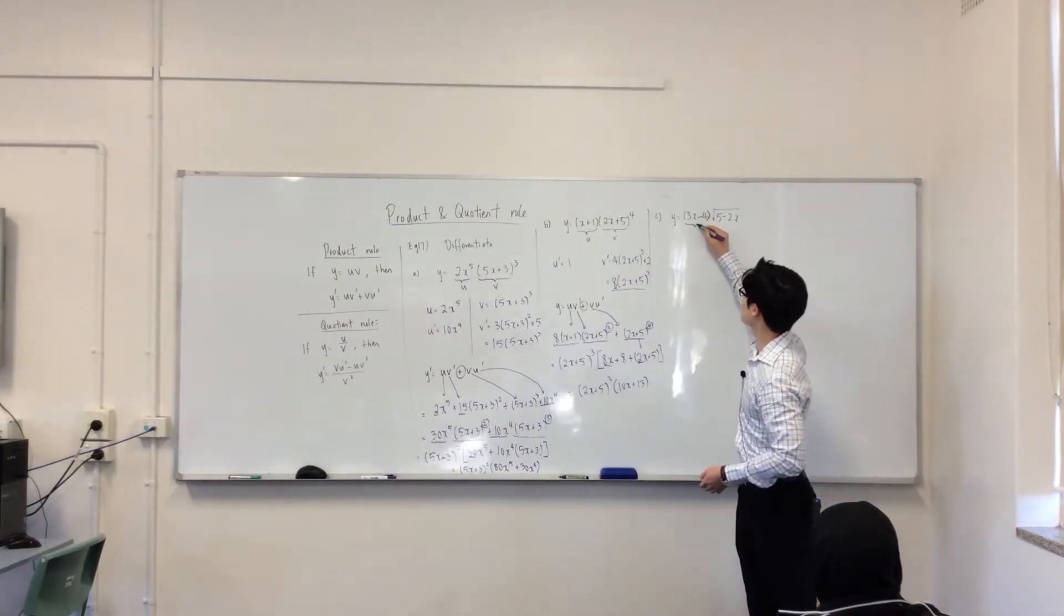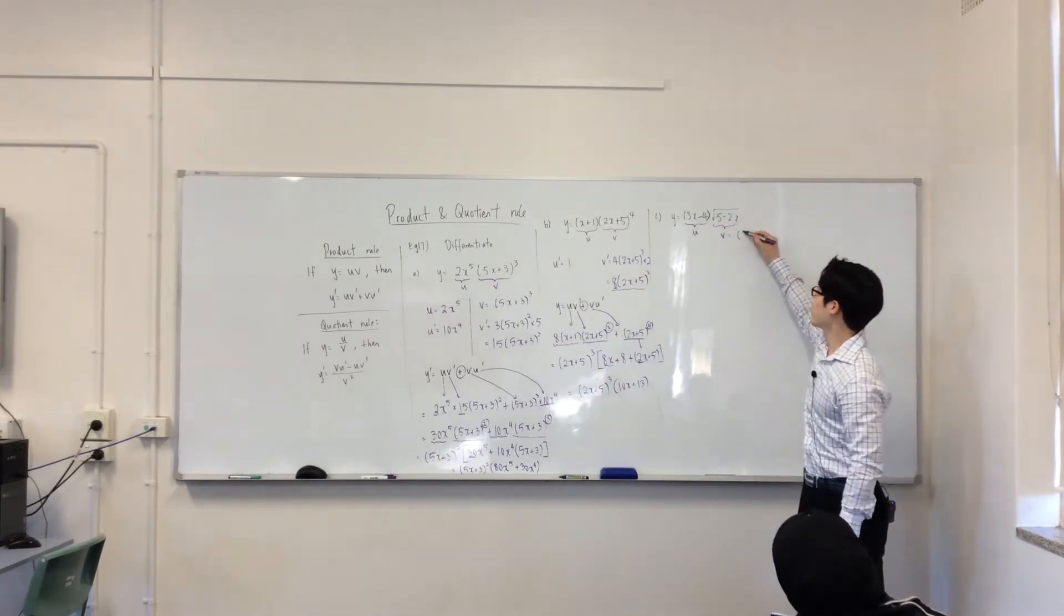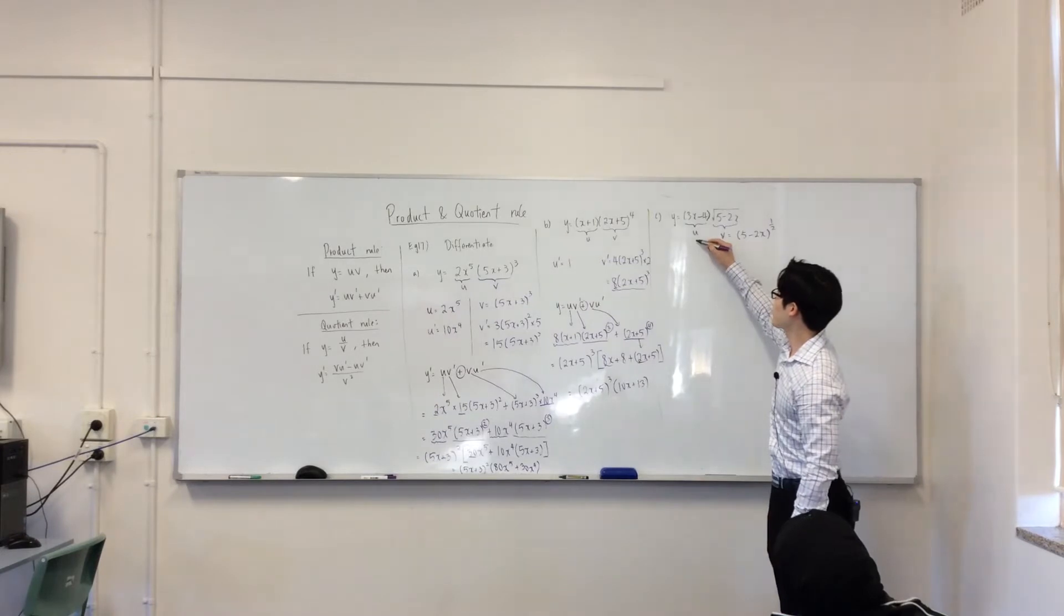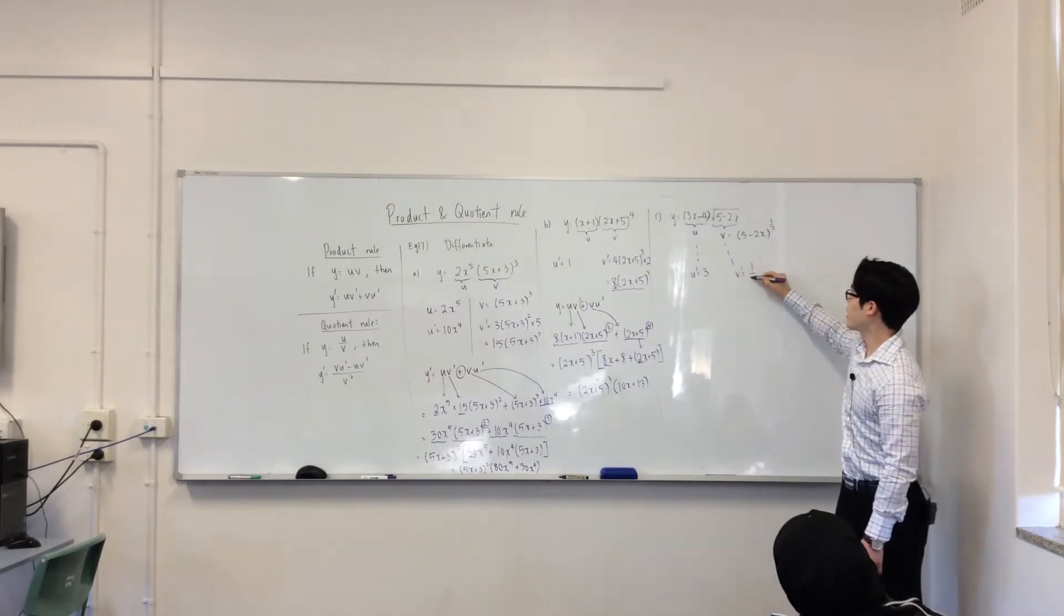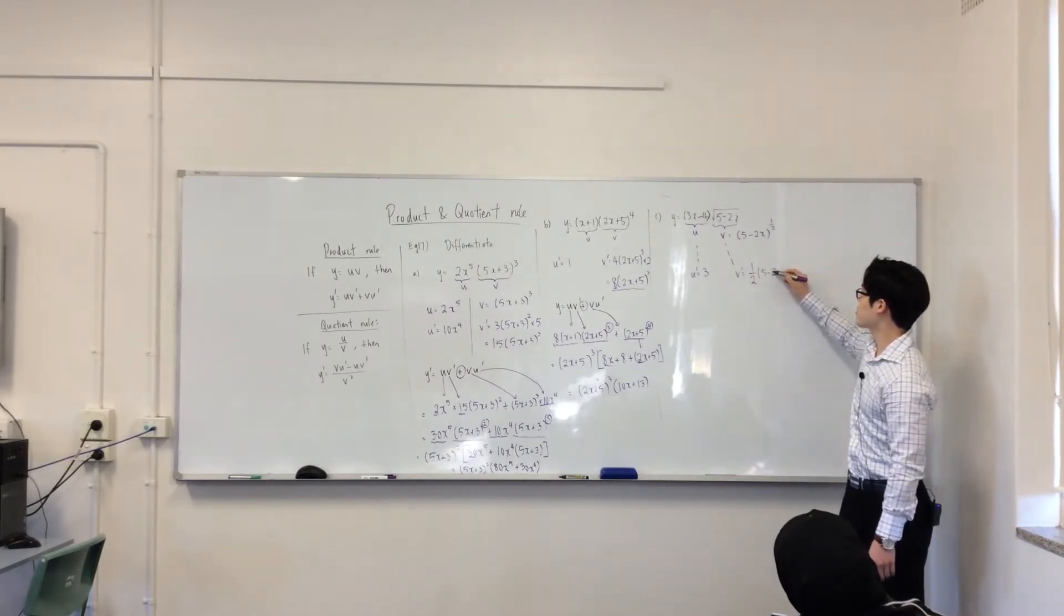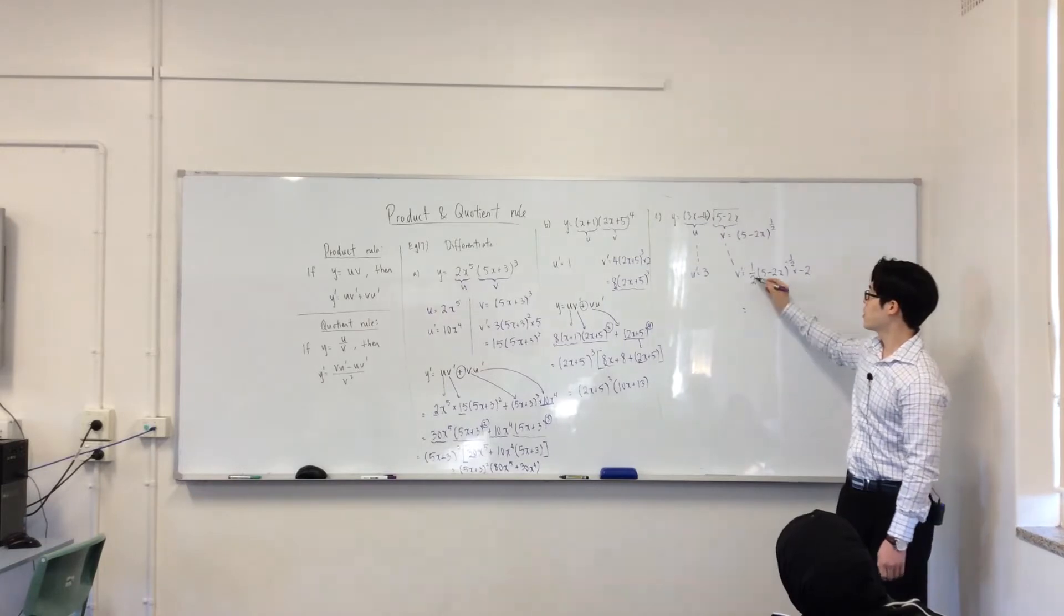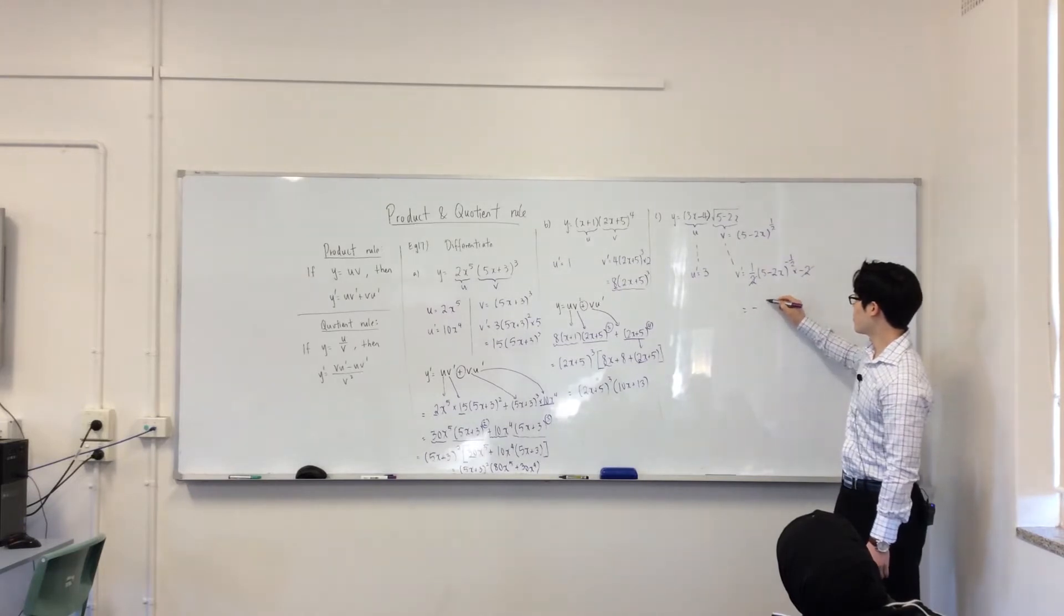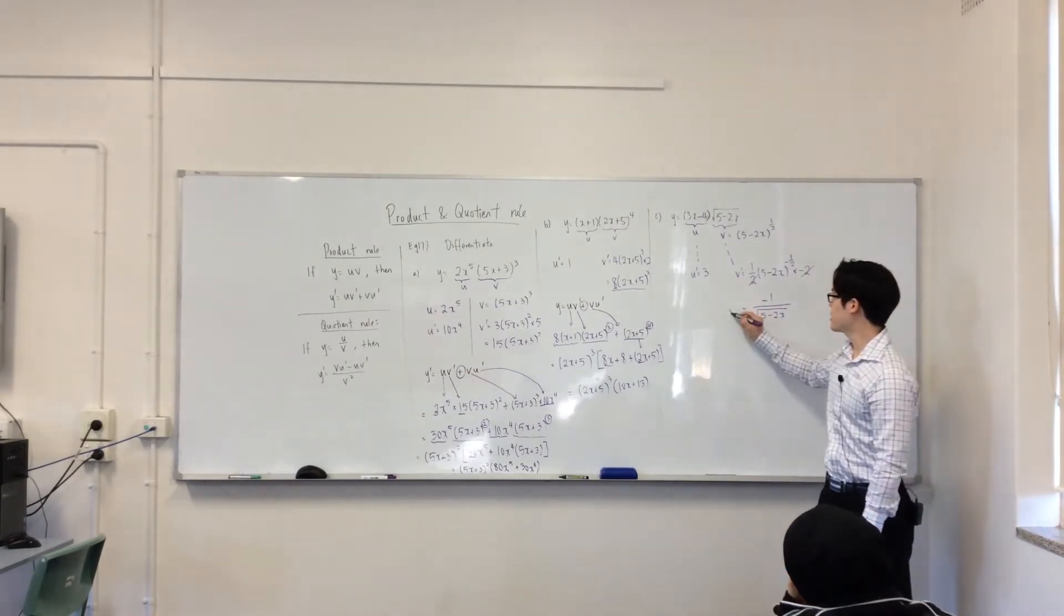Let's do the same thing. So, this is my U. Now, with this one, we want to write that V in terms of power. So, it's really this that you want. So, let's do the same thing. So, what's my U dash here? 3. And my V dash is half outside (5 - 2x)^(-1/2) times negative 2. Half times 2 is just gone. So, it's just negative 1. Does that make sense? So, this is my V dash.